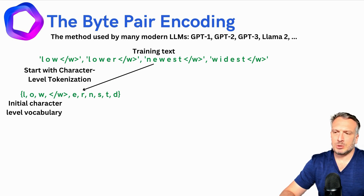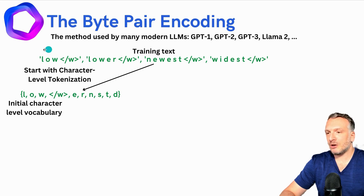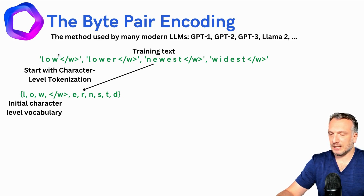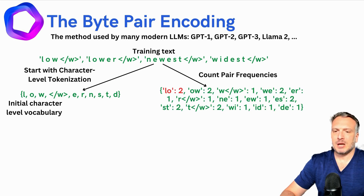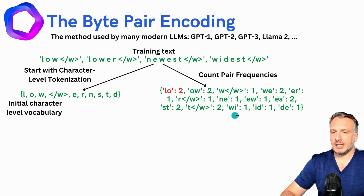Now what I'm going to do is look in that text and try to find frequent pairs of characters. For example, you have a pair of characters here: L and O, and O and W — those are pairs of characters that follow each other. You can notice that the pair L, O appears two times in that text. So let's count the pair frequencies. We have L, O appearing two times; O, W appearing two times; W, I appearing one time; and so on.